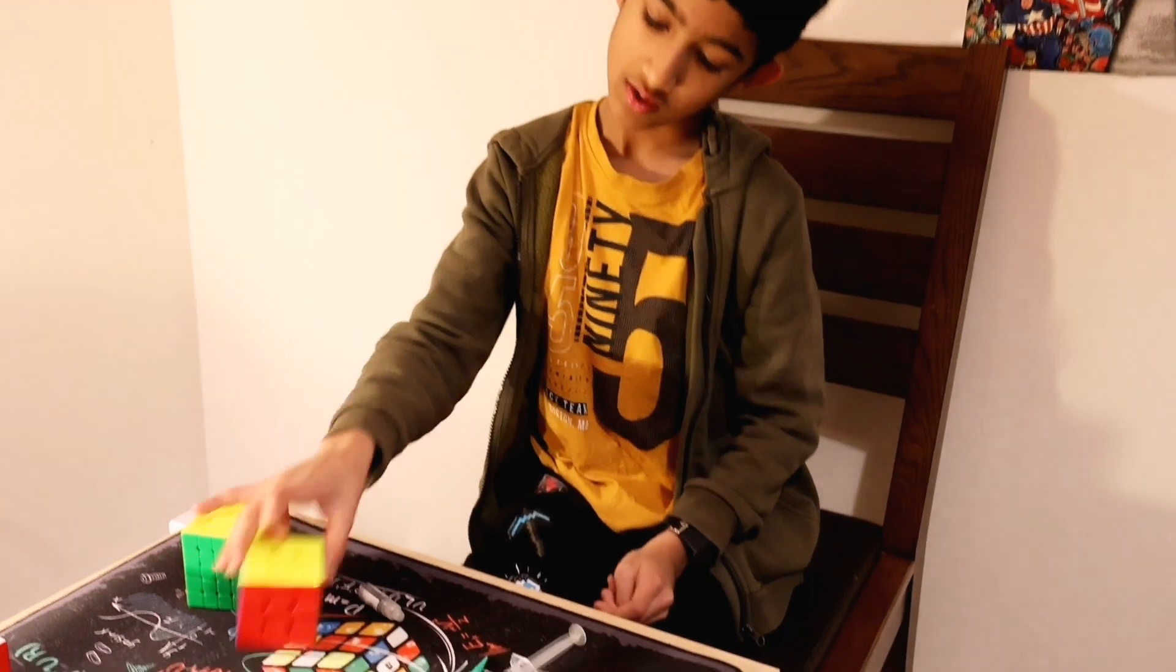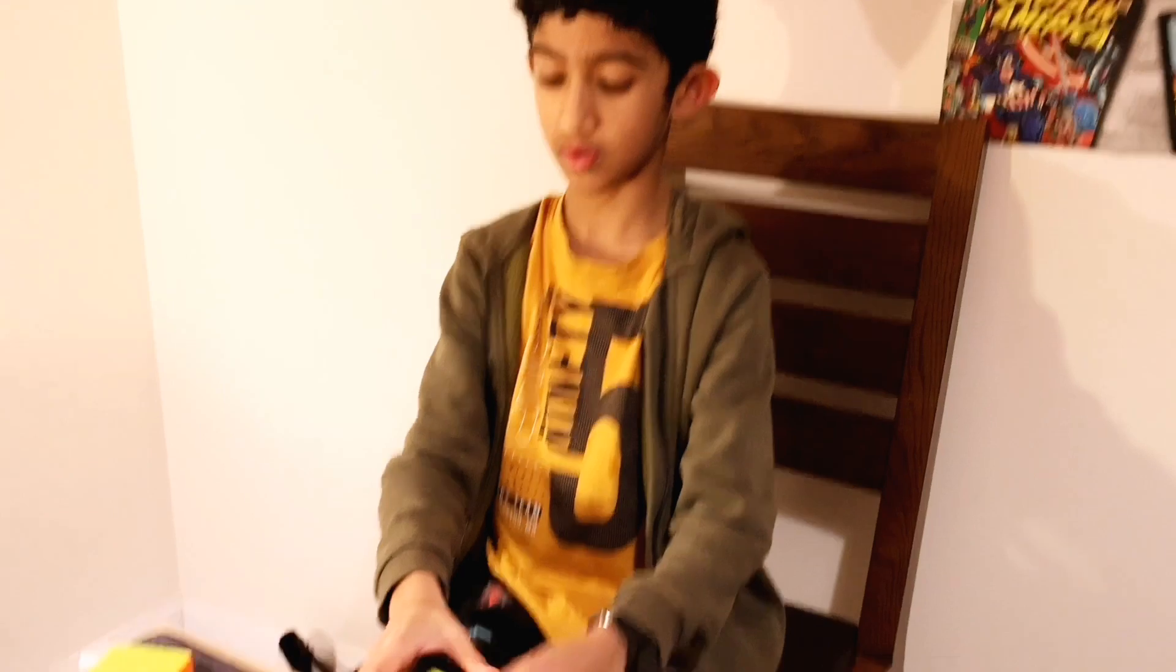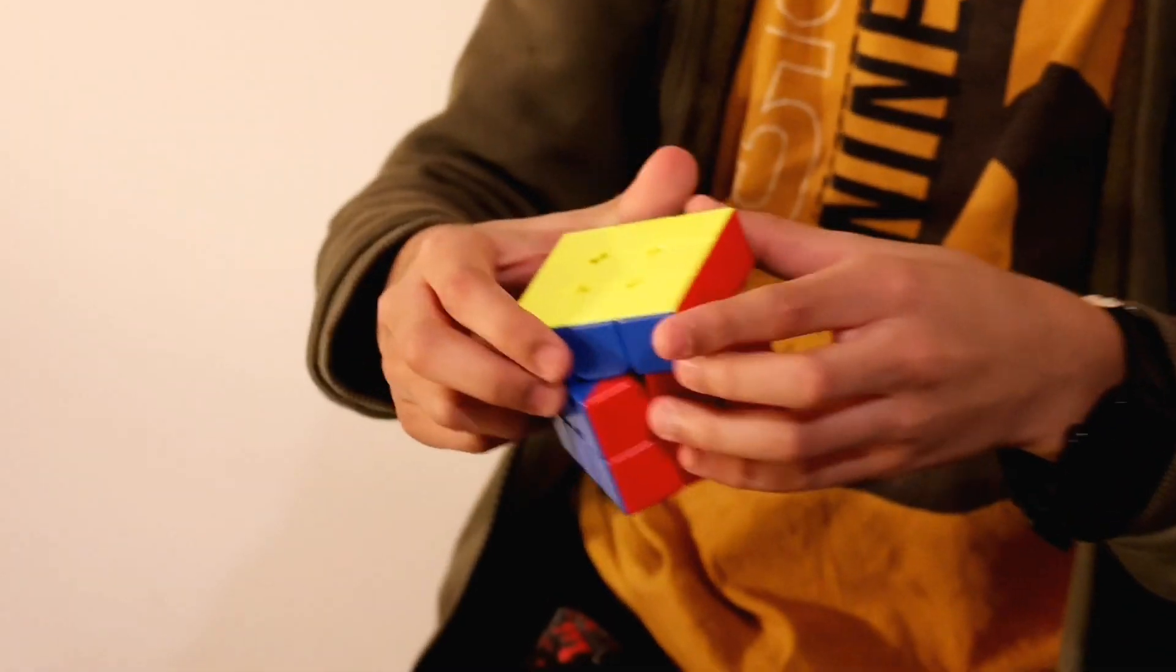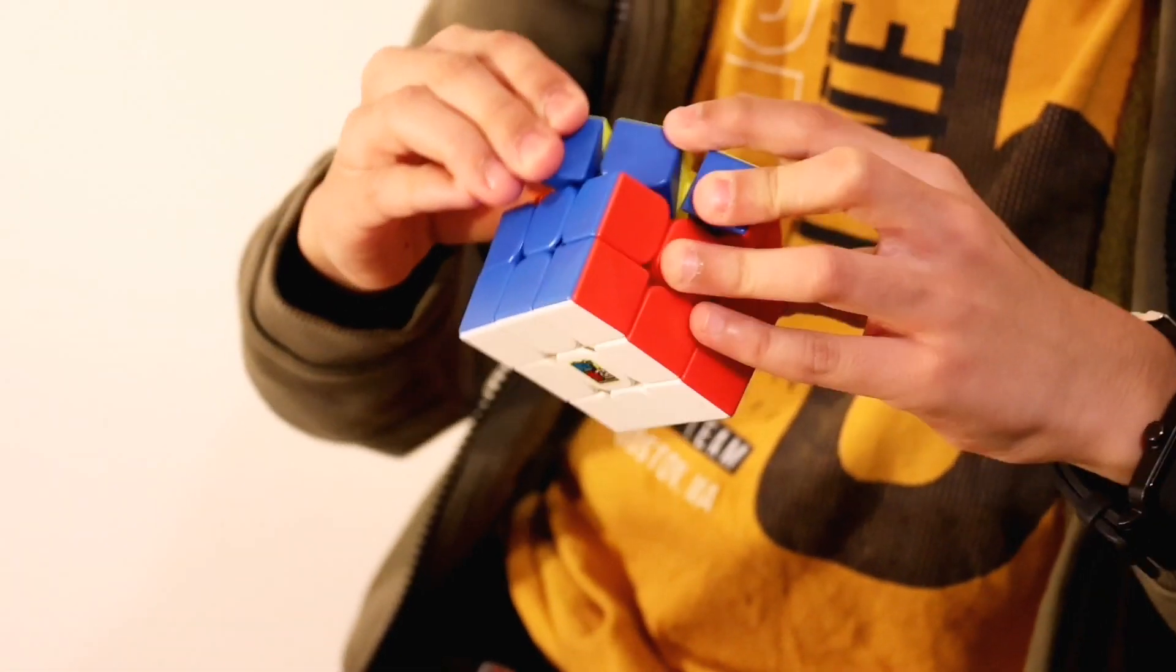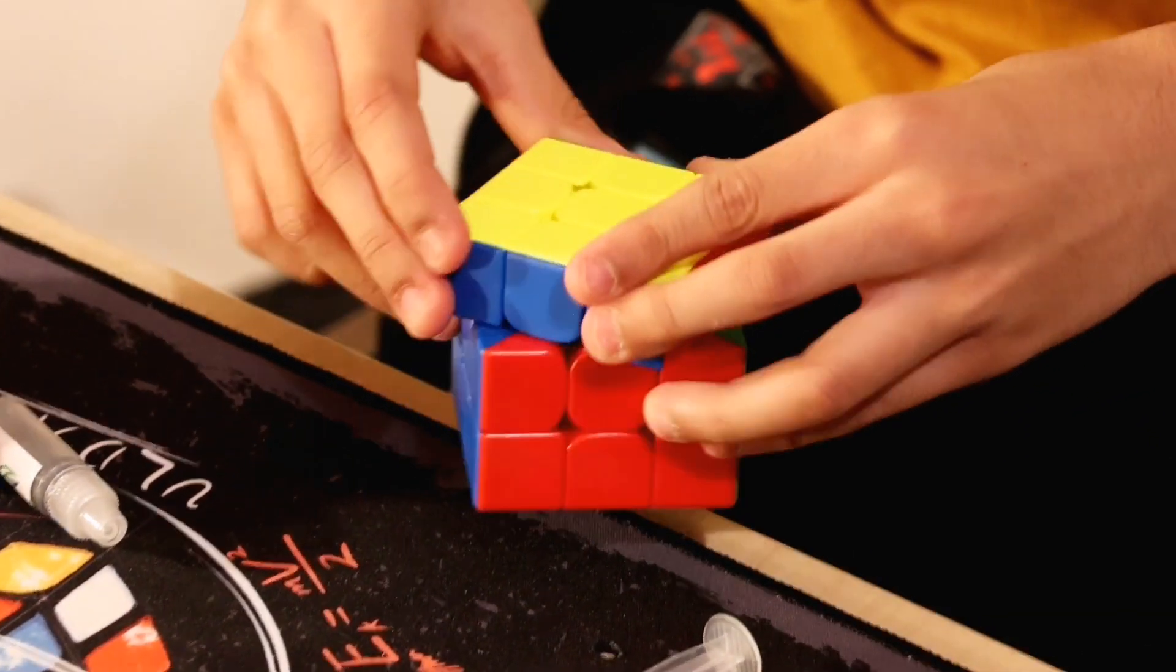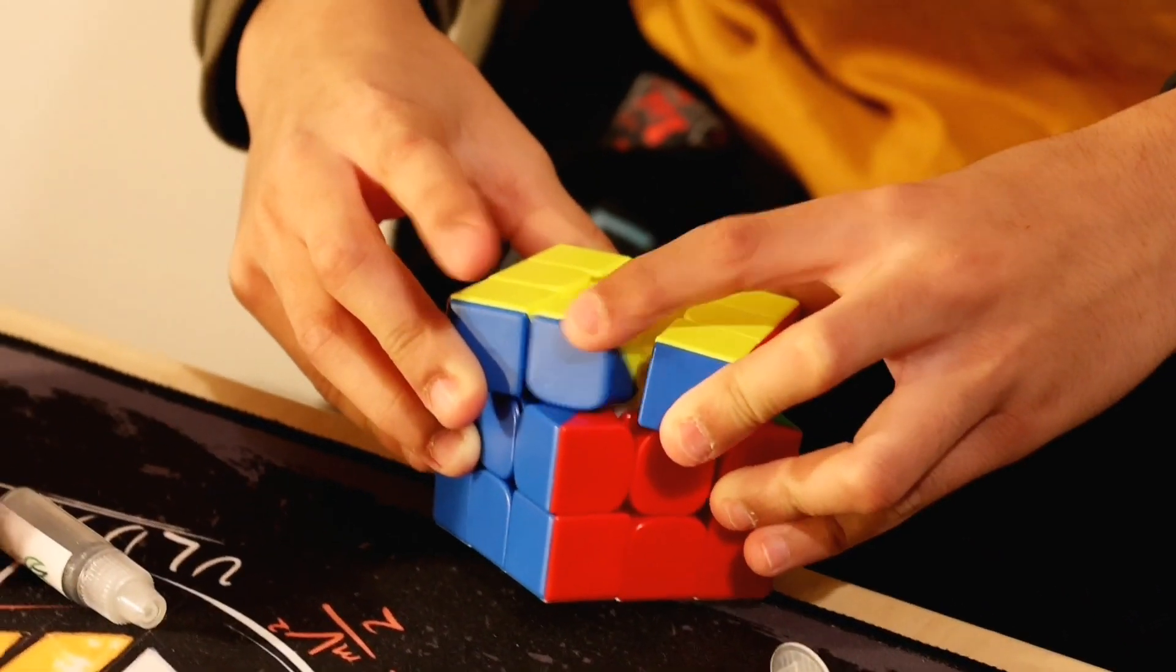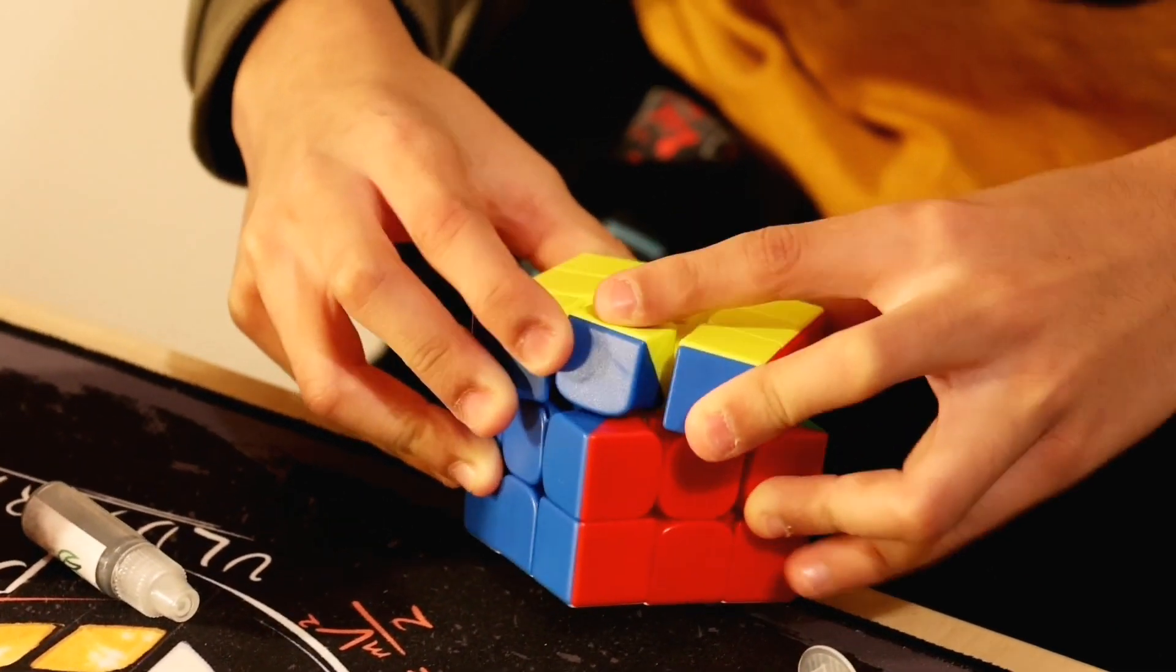To lube your cubes, like my how to disassemble and reassemble your cubes video, you want to put your cube at a 45-degree angle and then pull apart the cube. Now you don't want to take the pieces apart - well, you can, but you don't need to.